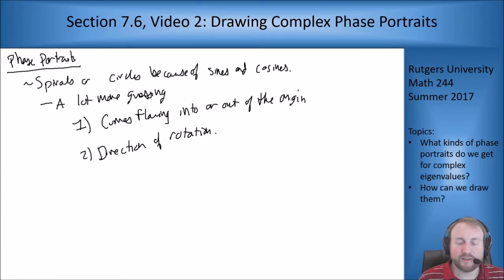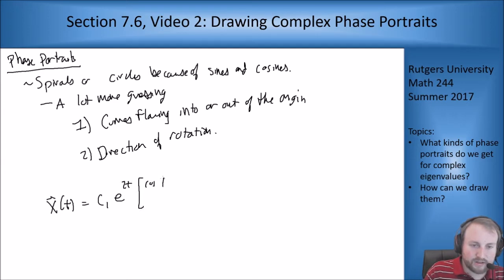Let's take those two guys we found in the last video as our example. So we had our general solution was going to be c1 times e to the 2t times the vector [cos t - sin t, cos t], plus c2 e to the 2t times [cos t + sin t, sin t].